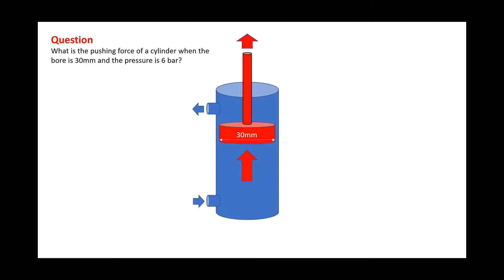Now most real-life applications when air is coming into a factory, it normally comes in at say 6 bar, so we're now going to work out the pushing force of this cylinder.